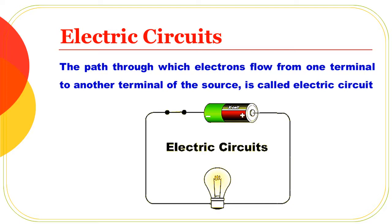You can see — the battery is the source. Through the wire, electrons flow from the negative terminal to the positive terminal, and that path is the electric circuit.